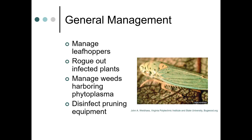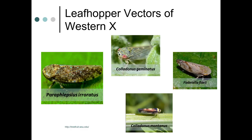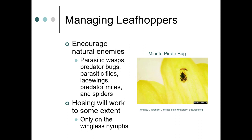Managing leafhoppers is really important. Rogue out infested plants, manage weeds harboring phytoplasma, and disinfect pruning equipment. These are some of the leafhoppers of Western X — I've posted information on this phytoplasma on Canvas. Encourage natural enemies such as parasitic wasps and predator bugs. Hosing plants will work to some extent, and right now you might be able to catch the wingless nymphs that are currently out there.